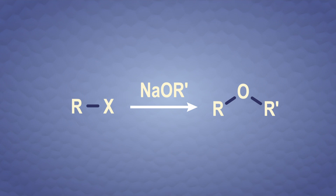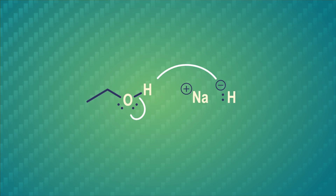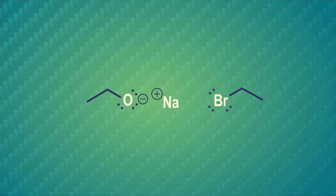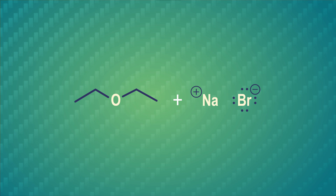Let's look at a general model of the reaction, which proceeds by an SN2 mechanism. The alkoxide displaces the halide ion, leaving us with an ether. Here's the synthesis of diethyl ether, which was used as a general anesthetic in the 1800s before we figured out anesthetics that didn't make patients vomit quite so much. We start with ethanol and sodium metal or sodium hydride, which deprotonates ethanol to generate an ethoxide ion. Then we add bromoethane, and the lone pair of electrons on the oxygen attacks the carbon atom, booting out a bromide ion and forming diethyl ether.